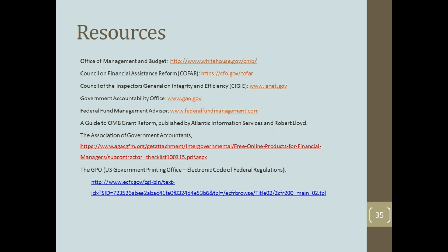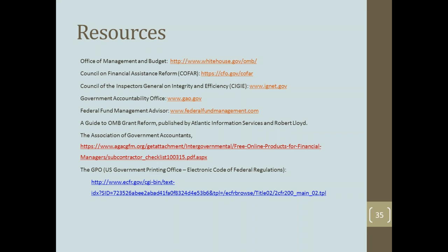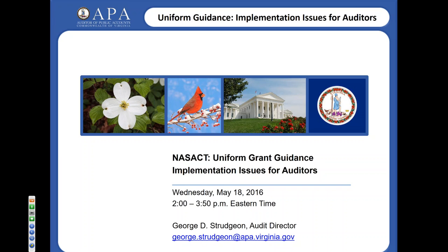Doug and Shirley, thank you so much. Great overview of some of the administrative and management challenges of the new uniform guidance and how your state has handled those. Next up, we have George Strudgen, the audit director and the single audit coordinator with the Commonwealth of Virginia, who is going to talk about single audit issues — subpart F. Good afternoon. My name is George Strudgen. I'm with the auditor's office here in Richmond, Virginia. Today, I want to talk to you about some of the differences between A133 and UG for major program determination — covering type A programs and type B programs and the risk assessment.